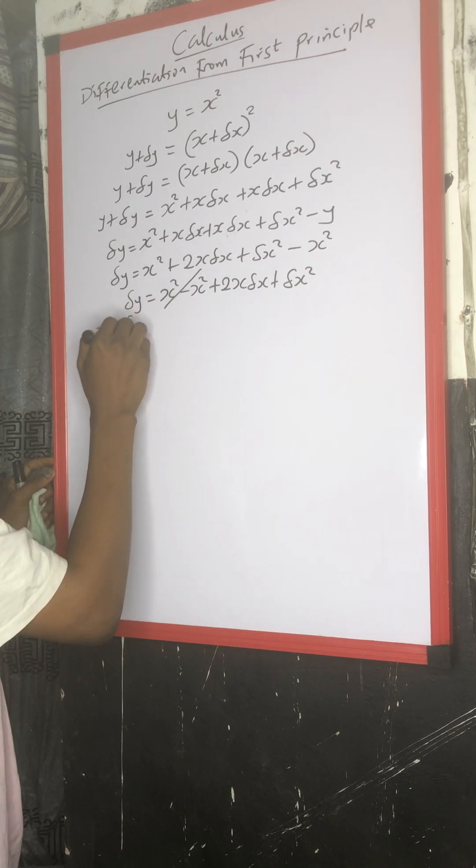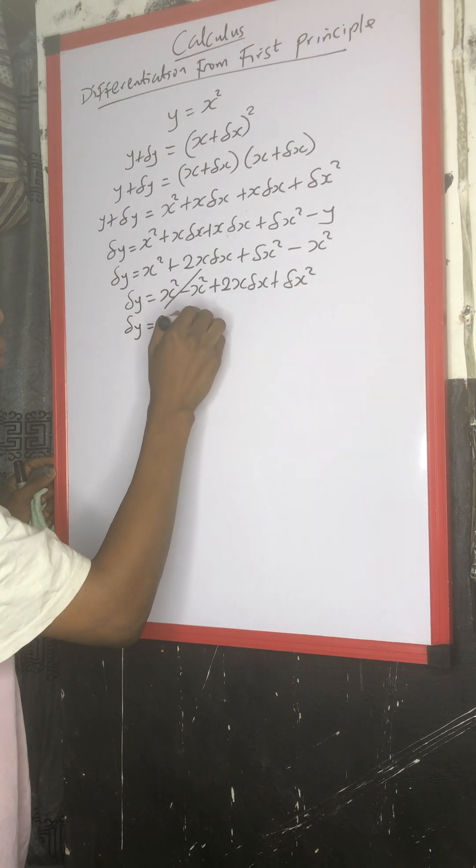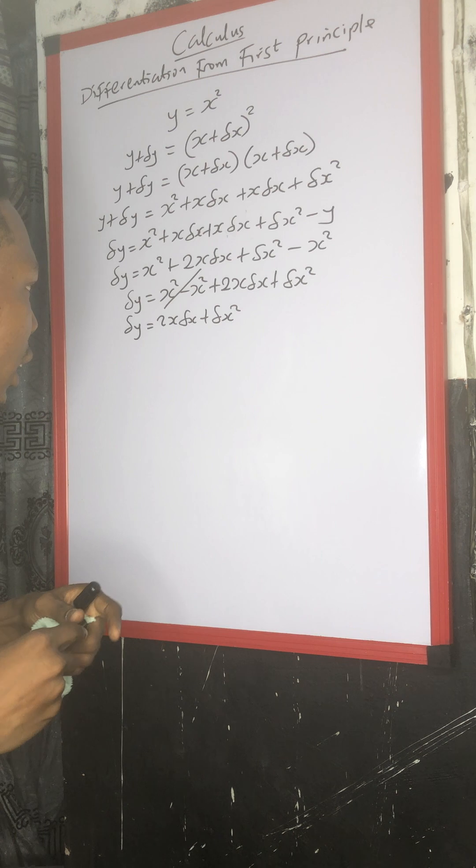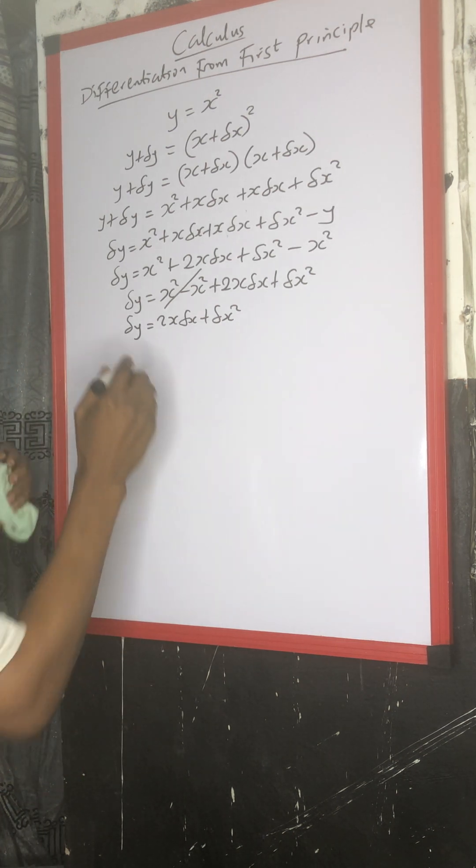The next step, we have change in y equals to 2s change in x plus change in x squared. Now, the next step you take is to divide through by change in x.